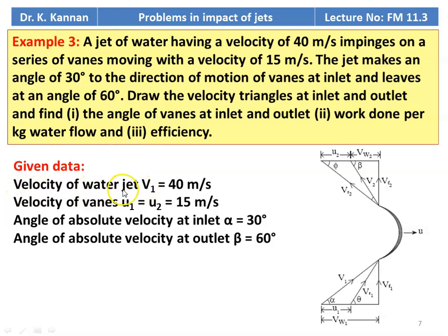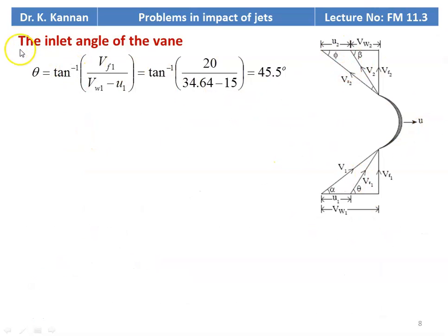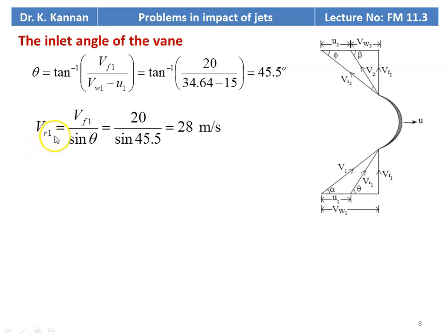Given: velocity of the water jet V1 = 40 m/s, velocity of the vane U1 = U2 = 15 m/s, inlet angle alpha = 30°, outlet angle beta = 60°. From the inlet velocity triangle: Vw1 = V1 × cos(alpha) = 40 × cos(30°) = 34.64 m/s; Vf1 = V1 × sin(alpha) = 40 × sin(30°) = 20 m/s. The inlet vane angle theta = tan⁻¹(Vf1 / (Vw1 − U)) = tan⁻¹(20 / (34.64 − 15)) = 45.5°. Relative velocity Vr1 = Vf1 / sin(theta) = 20 / sin(45.5°) = 28 m/s.